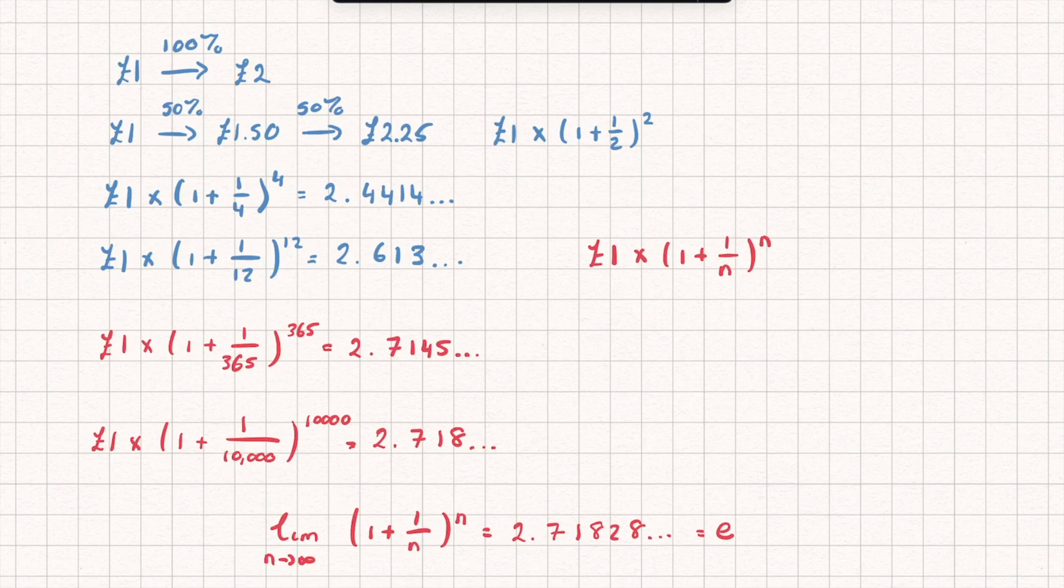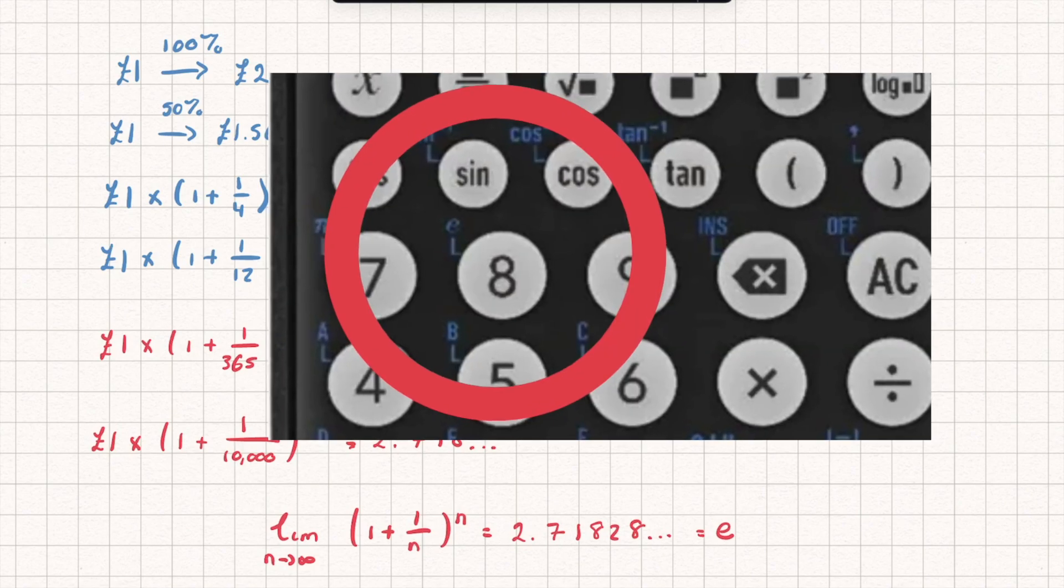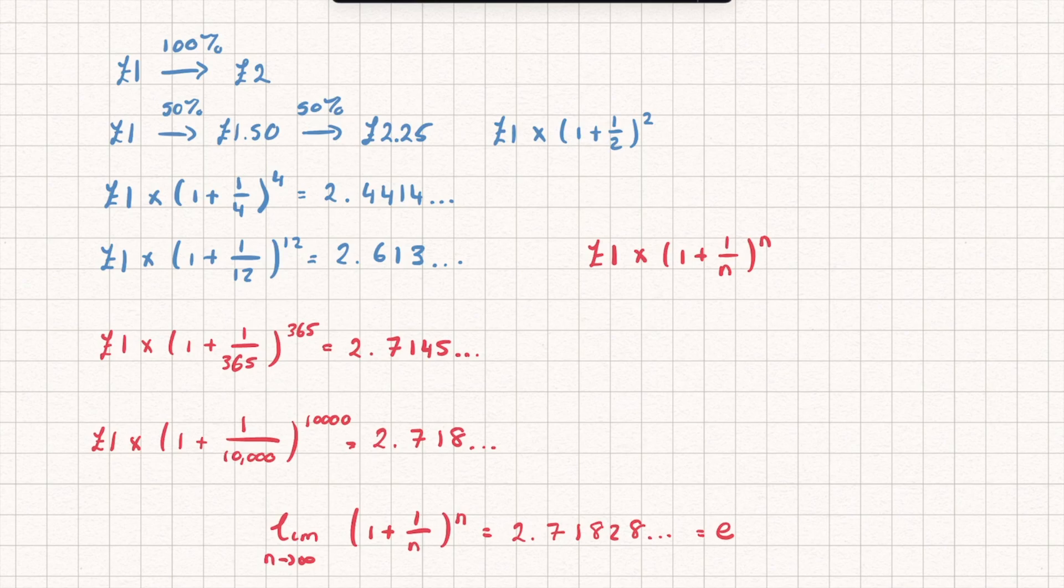And there's a button for it on your calculator. I'll put a picture on the screen now. And as we get interest infinitely often, we tend towards this mathematical constant e.